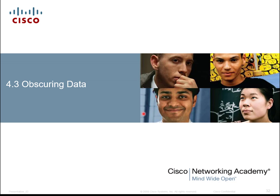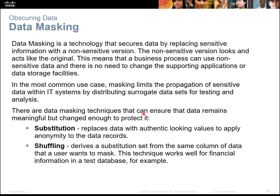Obscuring data is a big topic. You can replace sensitive information with non-sensitive information, send it out, and make sure it goes through with no issues. You can do substituting or shuffling of the information to make it look different. A lot of times companies will actually send out false information to verify that the connection from point A to point B is valid and true, and if it is intercepted, they can figure out how it was done with no loss of critical assets.